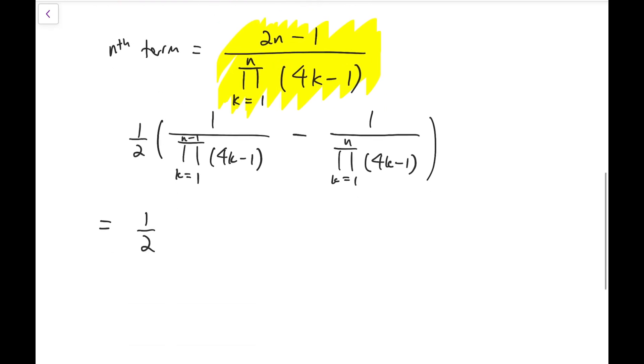So, to do this, we notice that these two are really close. It's just by a factor of 4n minus 1, so the numerator becomes 4n minus 1 minus 1 over the larger product.